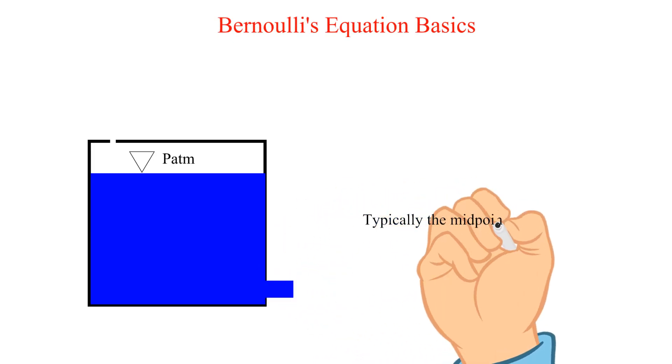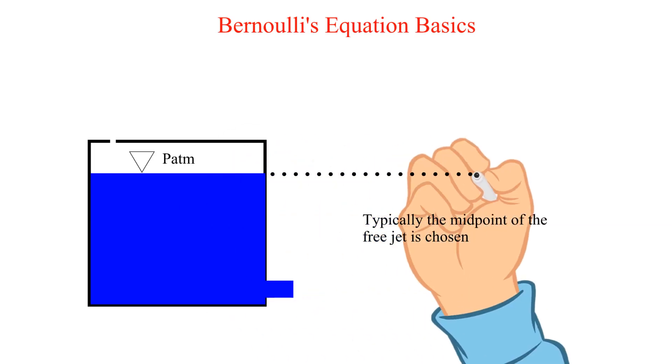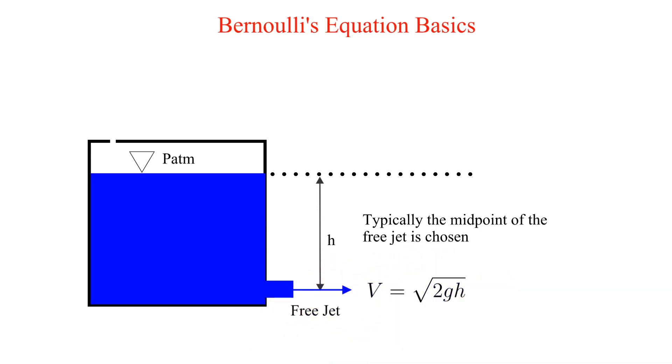Typically the midpoint of the free jet is chosen. This is representative of the average jet stream velocity. Many academic problems will simply draw the free jet at the vertical midpoint location so you likely won't even think about it.